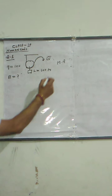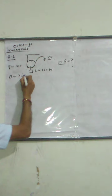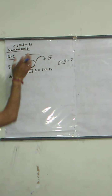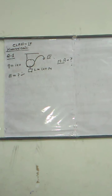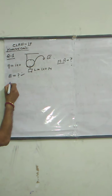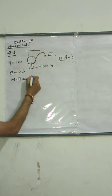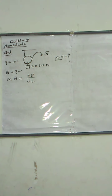We have to find mechanical advantage and effort. Efficiency is given to us and it is a movable pulley with the load attached. The mechanical advantage for a pulley equals distance moved by effort upon distance moved by load. Both values are not directly given, but we know how to calculate them.